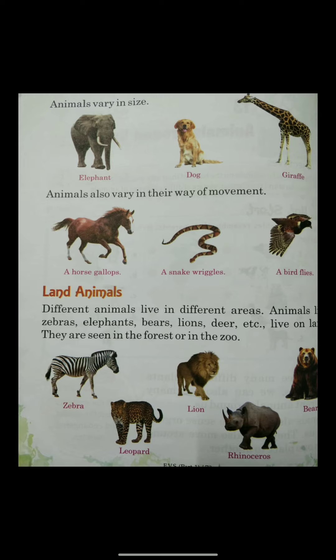Now let's read about land animals. Different animals live in different areas, just like we live in a house. Animals like zebras, elephants, bears, lions, and deer live on land — they are called land animals. They are seen in the forest or in the zoo. Horse, elephant, and giraffe are also land animals.